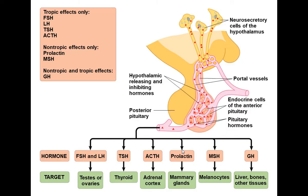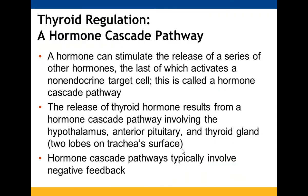Breaking down the anterior pituitary hormones: some have tropic effects, some have only non-tropic effects (prolactin and MSH acting on melanocytes), and GH has both tropic and non-tropic effects. Hormones can stimulate the release of other hormones — when a hormone secretes other hormones that then activate a non-endocrine target cell, you have a hormone cascade pathway.